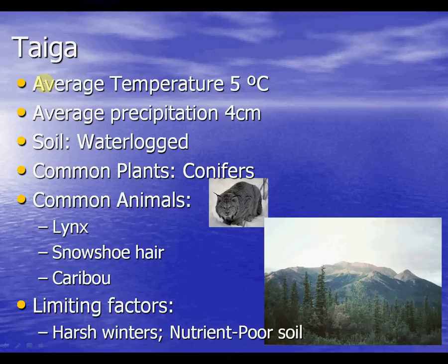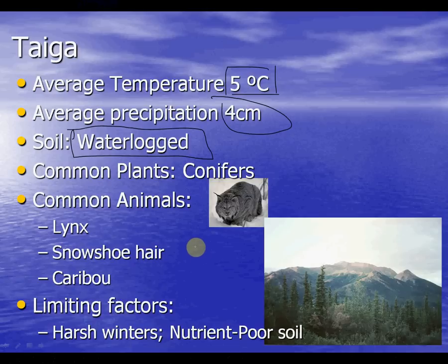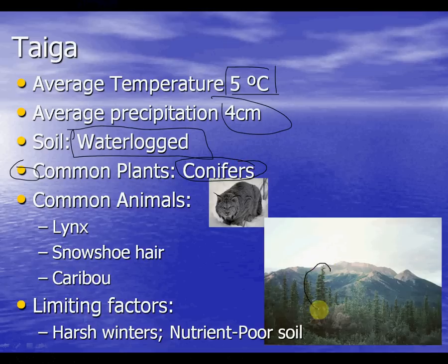Now for the taiga. The average temperature is five degrees Celsius, which is really cold. The average precipitation is about four centimeters. The soil characteristic is that it's waterlogged — meaning the water is backed up and frozen. The common plant characteristics are conifers, and you can see conifers pretty much throughout the picture on this slide.